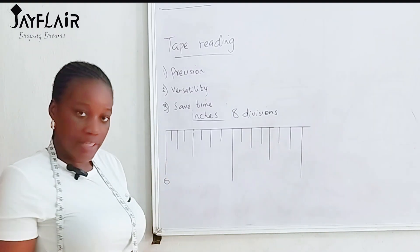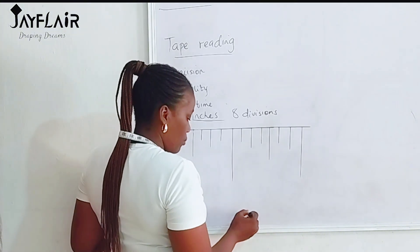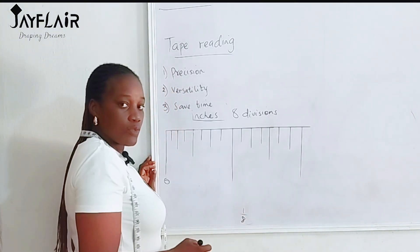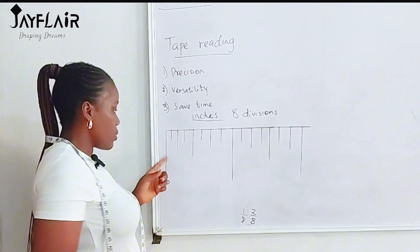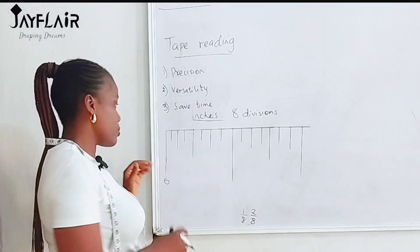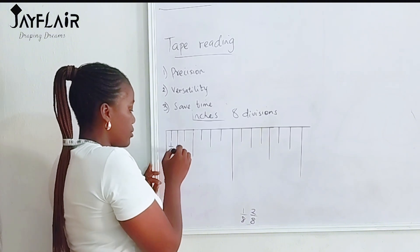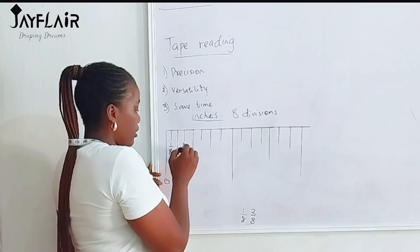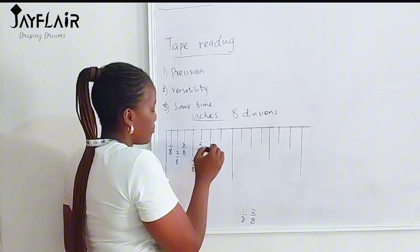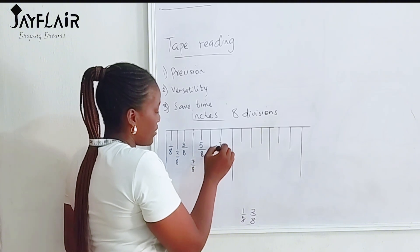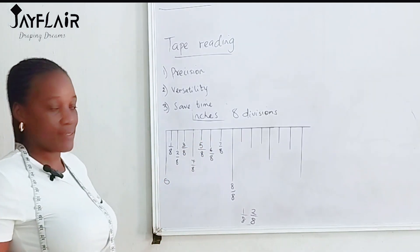And then in mathematics and fraction, we know that one out of the eight divisions will be written as 1 over 8. The next will be 2 over 8, and so on. So I'm going to label each of these lines for you to see. So the first line here is 1 over 8, then the second line is 2 over 8, 3 over 8, 4 over 8, 5 over 8, 6 over 8, 7 over 8, 8 over 8. Now this is what it is.